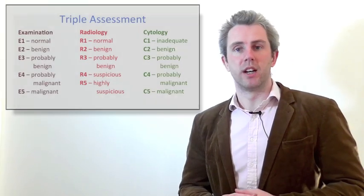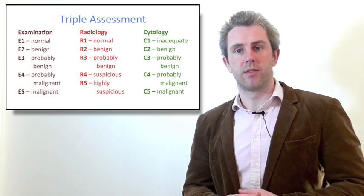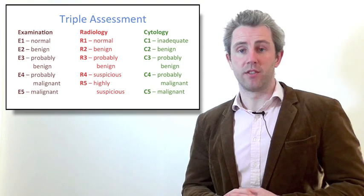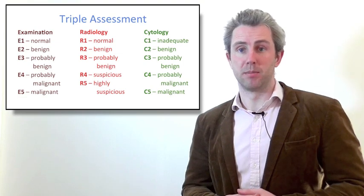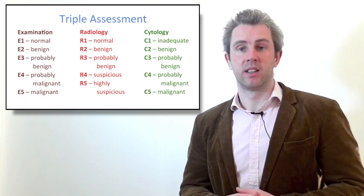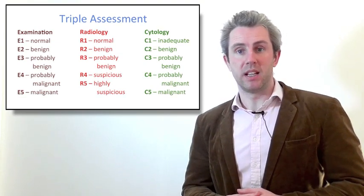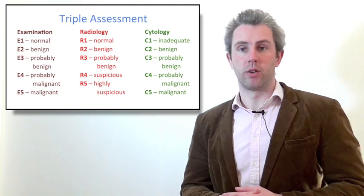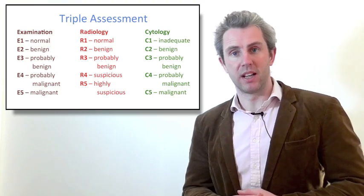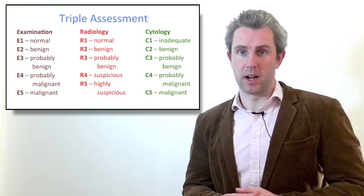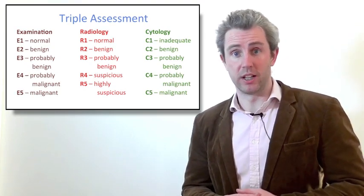After each stage of triple assessment, the outcome is graded between 1 and 5, where essentially 5 means the lump is malignant. Each number is preceded by the letter that corresponds to examination, ultrasound, mammogram, and cytology.